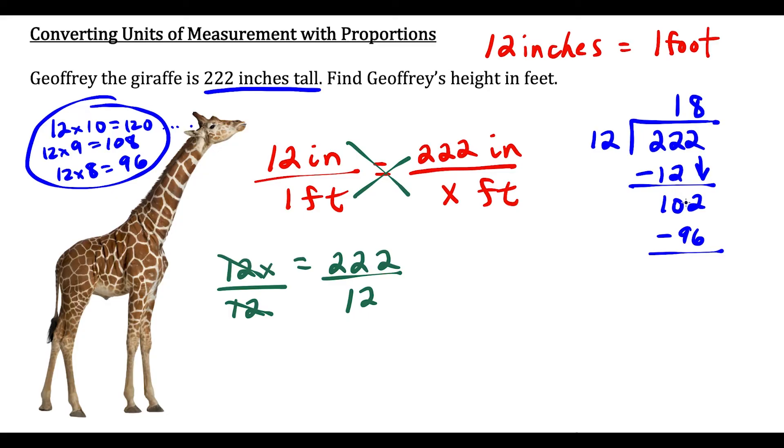From this step we have a remainder of 6. Once you run out of numbers this is when you throw on your decimal. So we could throw a decimal here as well and add an extra 0 for us. Now we bring down that 0.